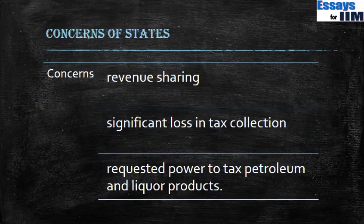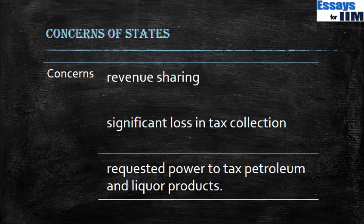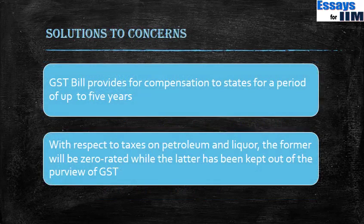Many states were protesting against the introduction of GST. Their concerns are, first, revenue sharing — how will revenue be shared, and they want more say in determining that. Second, there is a significant anticipated loss in tax collections; the CST rate is being reduced and states anticipate various losses. Third, they are requesting power to tax petroleum and liquor products. The GST bill provides for compensation to states for a period of up to five years to address the losses from the reduction in the interstate tax rate, though there are conditions attached.